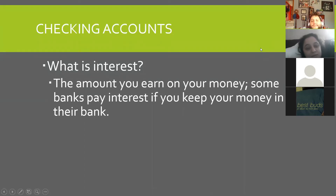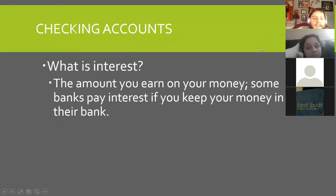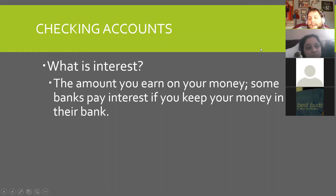Somewhat. So interest is the amount you earn on your money. Say you deposit $500 into a savings account — that money will earn interest at a certain percentage rate that the bank tells you. Let's say the interest rate is 5%. Your $500 will keep earning 5% interest — presumably each month, though that'll be set up in your agreement. Some banks pay interest if you keep your money in their bank, so that's good to know.